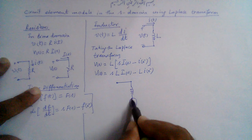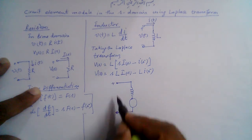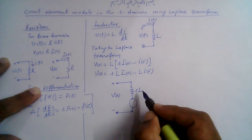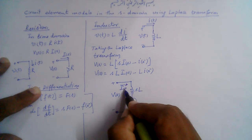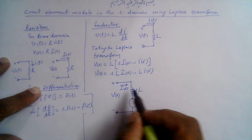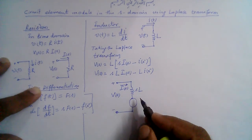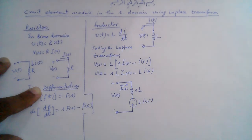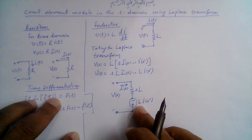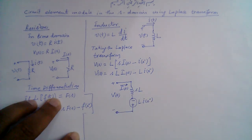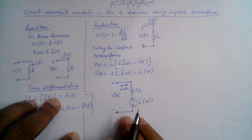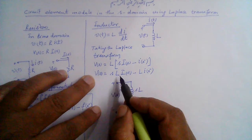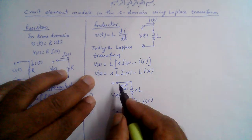We can represent the inductor in the S domain like this: there is an impedance sL, a current I(s) flowing through it, and a voltage source L·I(0⁻) in series with a negative sign indicating its polarity. This voltage source appears in the S domain due to the initial conditions of the inductor — the Laplace transform takes care of initial conditions automatically.